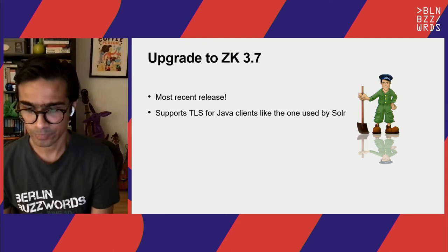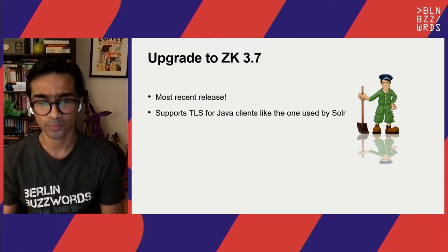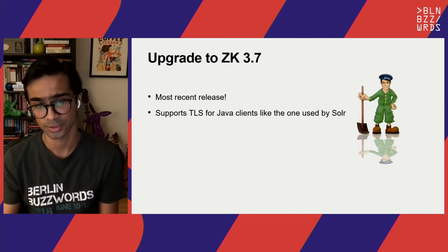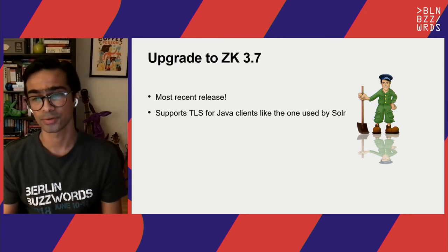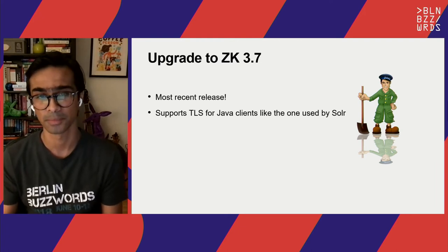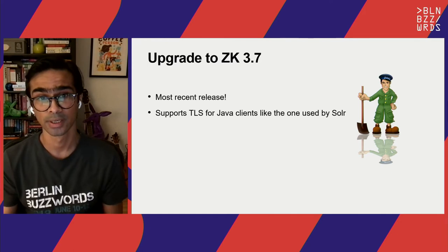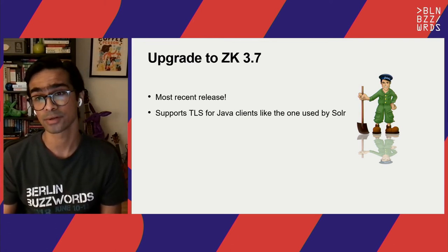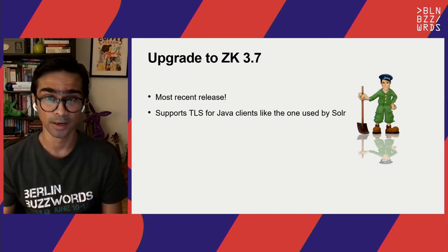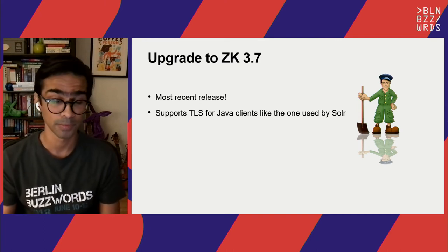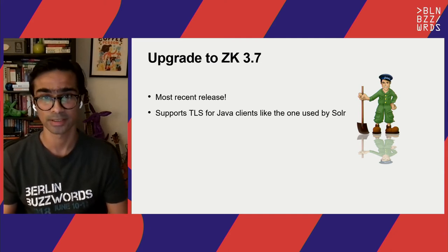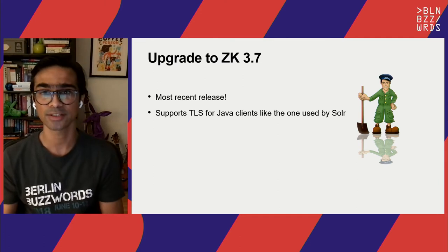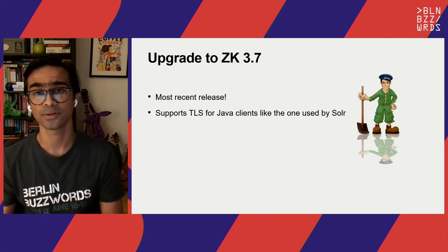Until Solr 8.x, while TLS worked fine between clients and Solr instances, there was no way for Solr to talk to ZooKeeper over TLS — a restriction of the ZooKeeper Java clients, not Solr. With the ZK 3.7 release about a year ago, the ZK client now allows TLS communication with TLS-enabled ZooKeeper clusters, allowing people to run an end-to-end TLS-secure Solr cluster where both Solr interactions and Solr-to-ZooKeeper interactions are TLS-enabled.